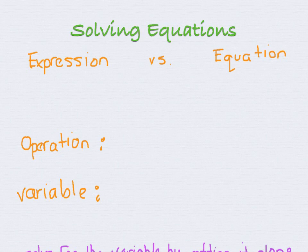So if we're talking about an expression, you've seen expressions before. Usually when we talk about things like polynomials and monomials and binomials and so on, an expression just has more than one term in it. So an example of an expression would be something like x plus 6. This is just a straight binomial with two terms, x and 6.